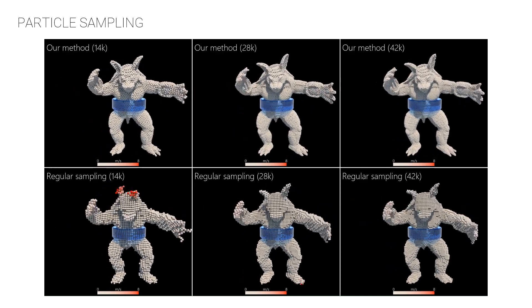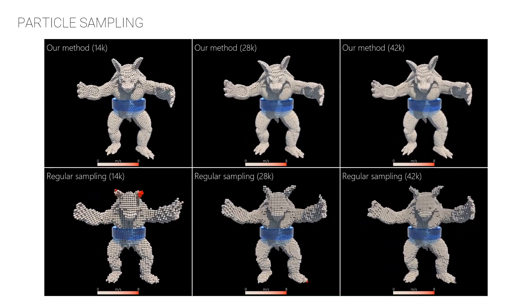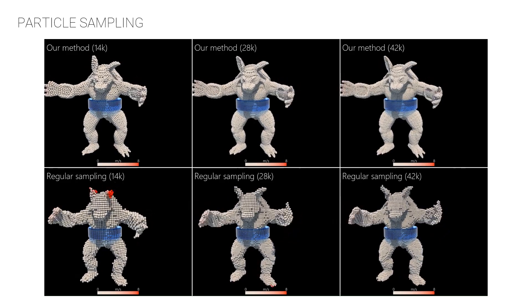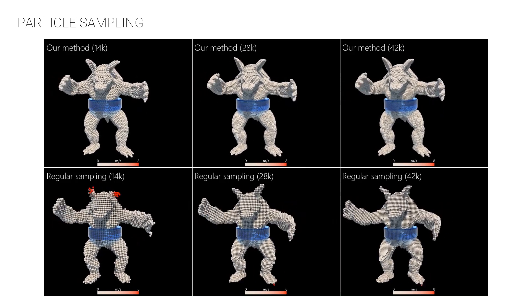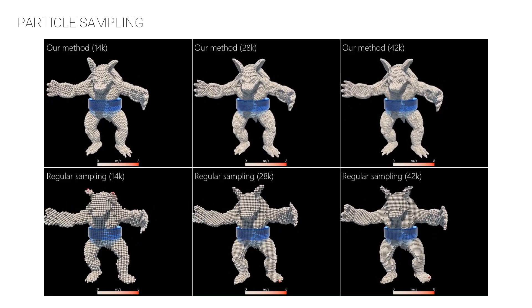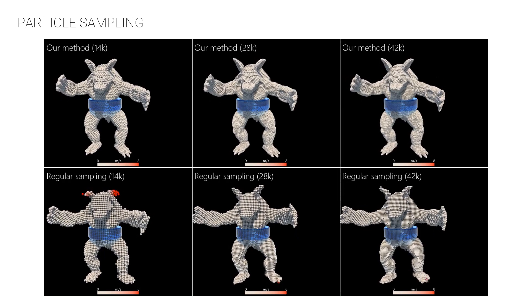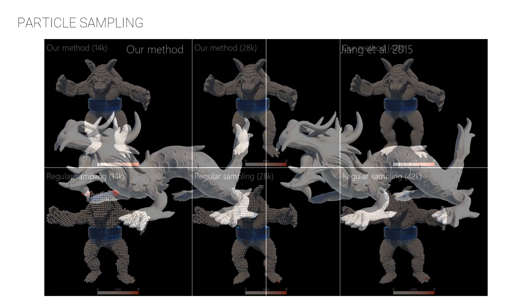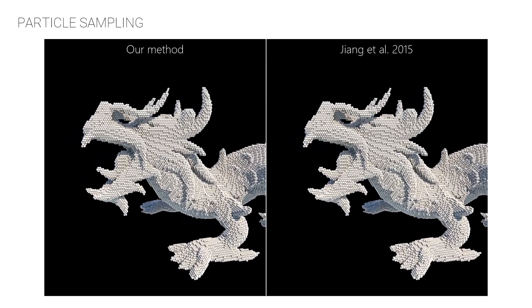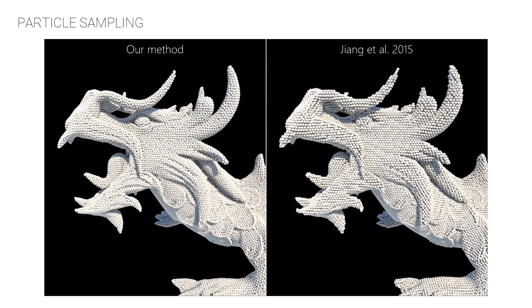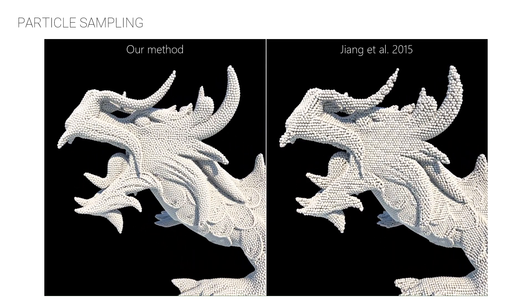Although SPH is a meshless method, the simulation of solids requires a particle sampling of the geometry. Unfortunately, a simple regular sampling may lead to simulation artifacts. We present a new sampling algorithm that delivers visually superior results compared to state-of-the-art blue noise sampling.